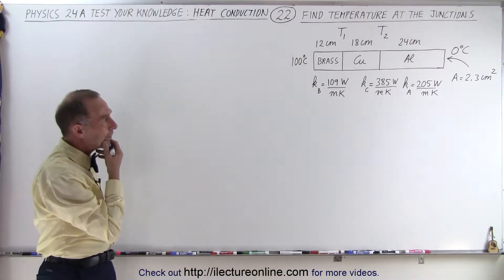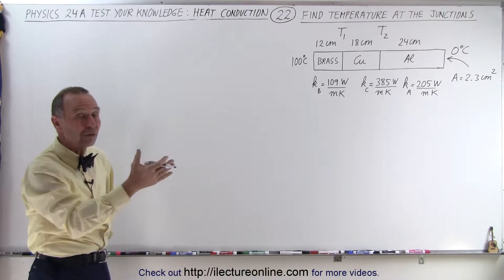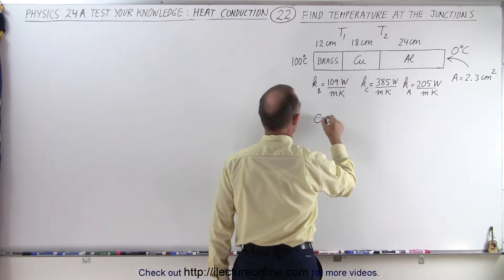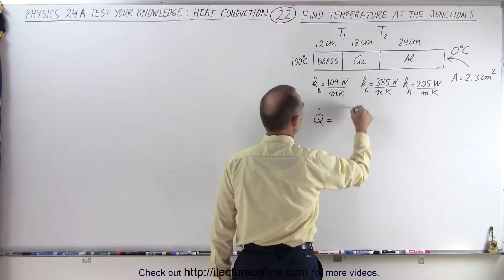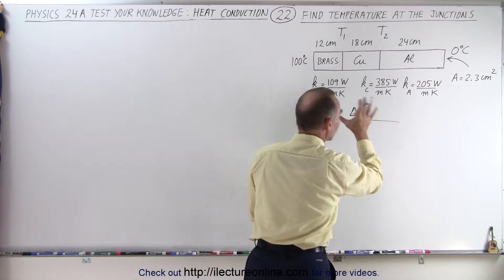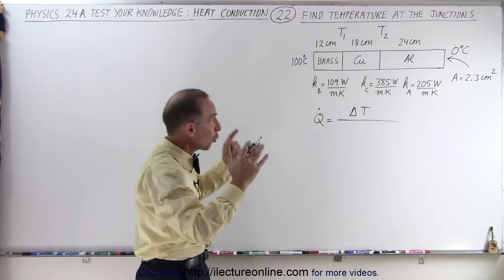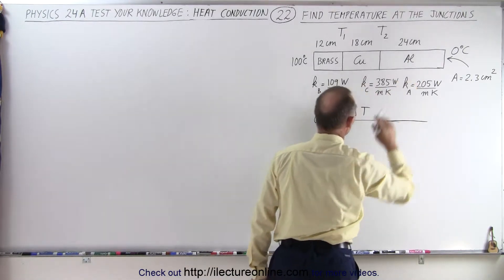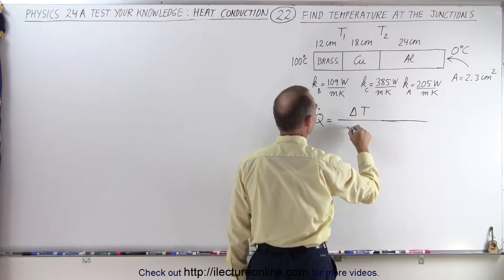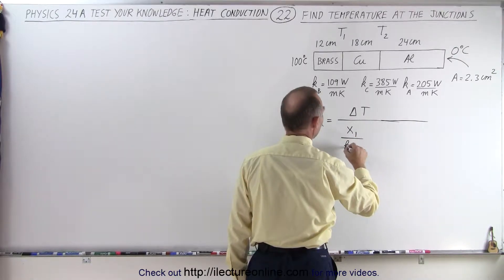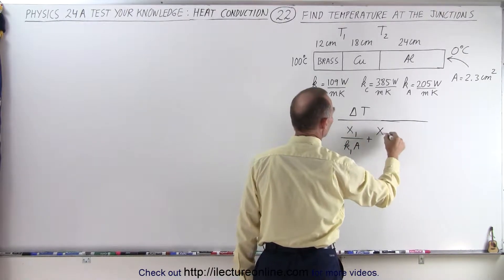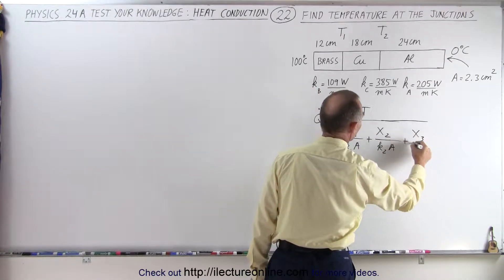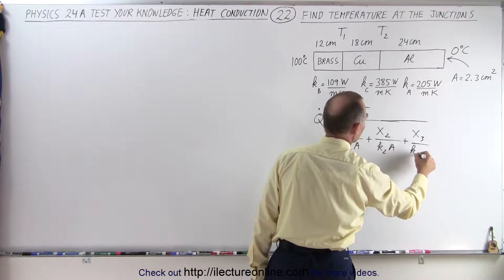So how do we do that? We first need to find the heat flow through the combination of brass, copper, and aluminum. Q-dot is equal to the difference in temperature in the numerator — simply the total temperature difference — and in the denominator we have the sum of the heat resistances of the three sections: x1 divided by k1 times A, plus x2 divided by k2 times A, plus x3 divided by k3 times A.